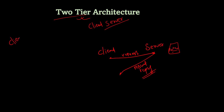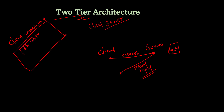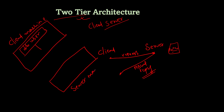In two-tier architecture, the client machine is separate and the server machine is separate. The client machine has the database user, and the database system is on the main server machine. The client and server machines interact with each other through a network connection.